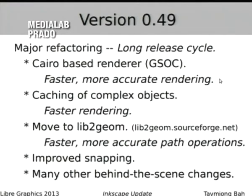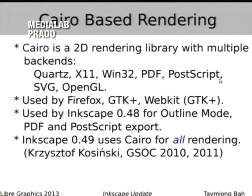The biggest change is using a Cairo-based renderer. It's faster and produces more accurate rendering. There's also caching of complex objects for faster rendering, a move to lib2geom — a geometry library for manipulating paths — which gives you faster, more accurate path operations. There's improved snapping and many other behind-the-scenes changes.